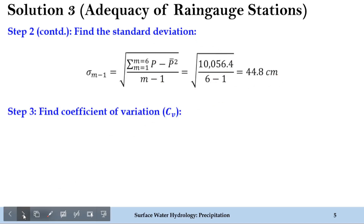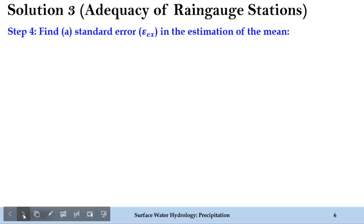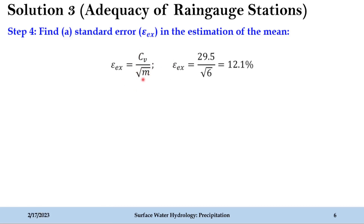In step 3, we find the coefficient of variation, CV. CV is obtained as the ratio of the standard deviation to the mean rainfall, multiplied by 100. We now know both values: 44.8 divided by 151.8, times 100, giving a coefficient of variation of 29.5. In step 4, we find the standard error — which is the requirement of the first part. The standard error is obtained as CV divided by the square root of m (the number of stations). Substituting, we get 12.1% as the standard error.